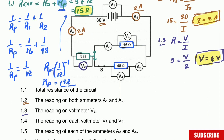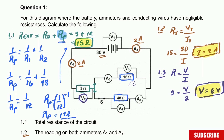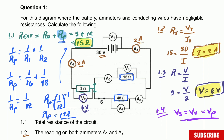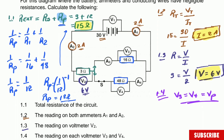Question 1.4: the reading on each voltmeter V3 and V4. Note that V3 and V4 are in parallel, so they will be the same. Let's write that down for 1.4 — and we already know from question 1.3 that the 3 ohm resistor has 6 volts across it. Now, V3 equals V4 because they are in parallel, and we know the potential difference is the same across parallel branches.